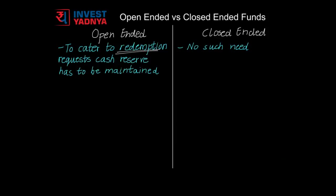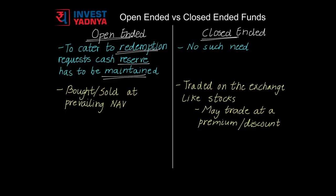To cater to redemption requests in case of open-ended funds, the fund managers have to maintain a certain cash reserve. This is not a need in case of closed-ended funds, as the number of units always remains constant. As redemption is not a possibility before the end of duration in case of closed-ended funds, to offer some amount of liquidity to its investors, these funds get listed on the stock exchange where they can be traded like other stocks.